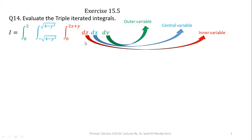We will always start the process of integration with respect to the most inner variable. Then, on the outcome of the inner variable integration, we will apply the rule of integration with respect to the central variable. After completing that, we apply integration with respect to the outer variable. So here we start with z, then x, then y.